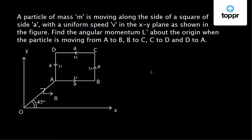Let us discuss a question on angular momentum which came in JEE Mains 2016. A particle of mass m is moving along the side of a square of side a with a uniform speed v in the xy plane as shown in the figure. We need to find the angular momentum L about the origin when the particle is moving from A to B, B to C, C to D, and D to A.